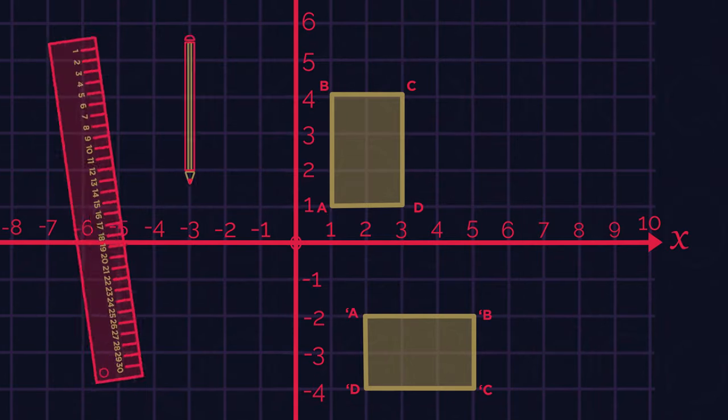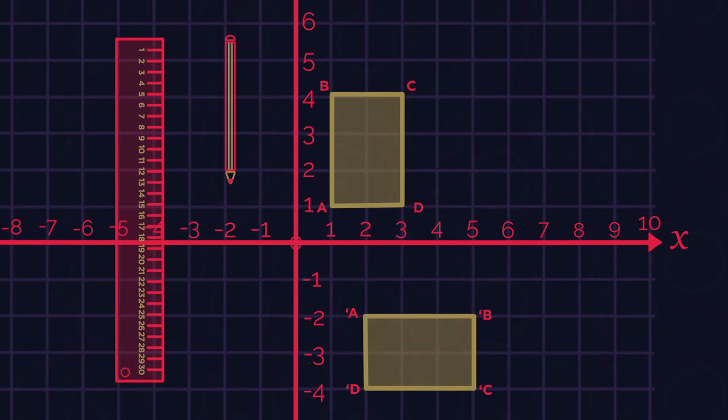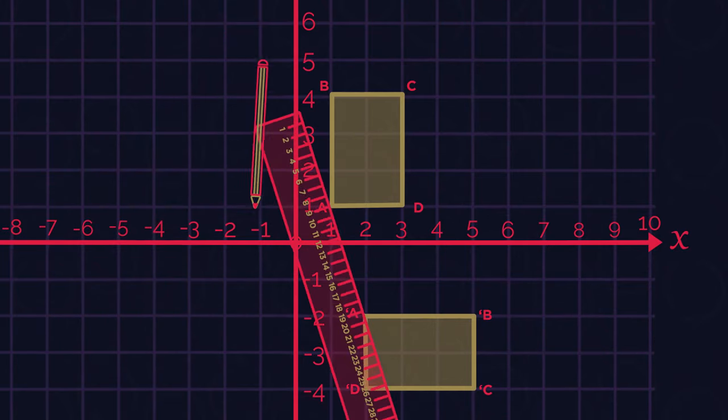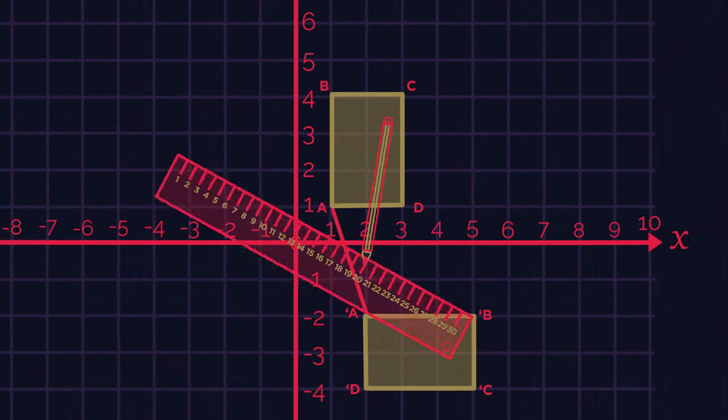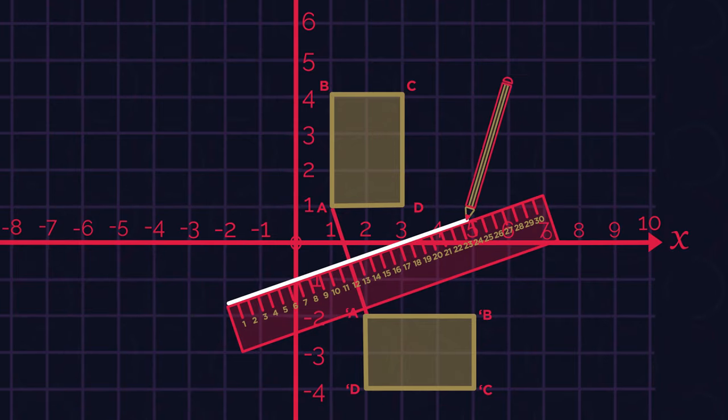Grab a ruler and a pencil and let's get started. Join the corresponding points A and A' with a straight line. Measure exactly halfway along the line and draw a dot. From this dot, draw a line that is 90 degrees to the line, so that the two lines form a cross.